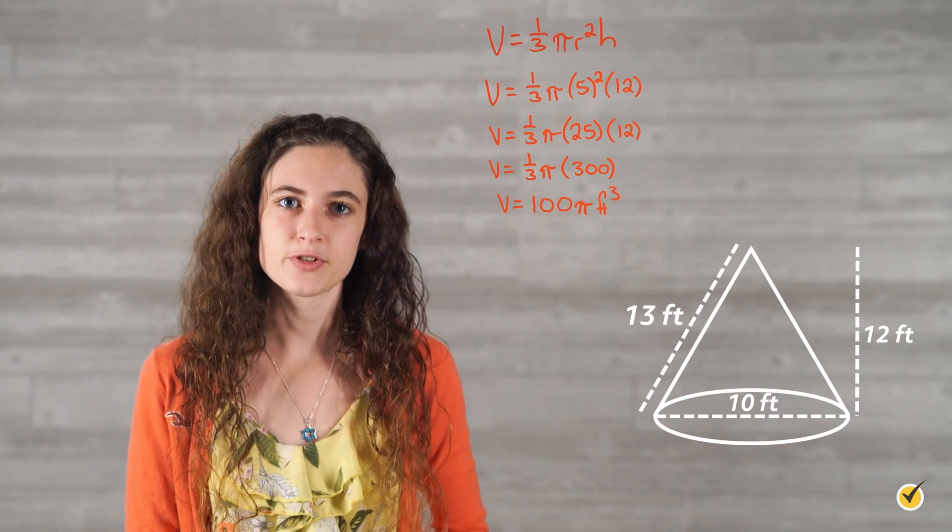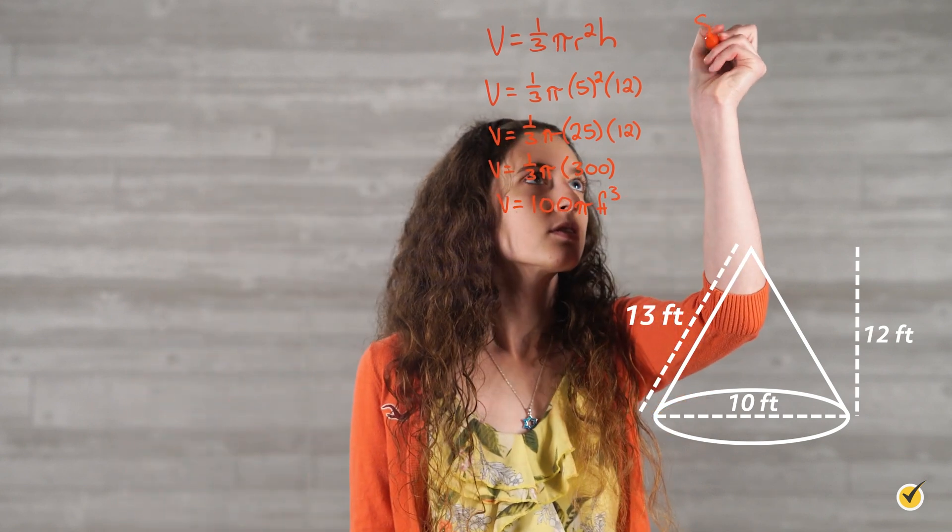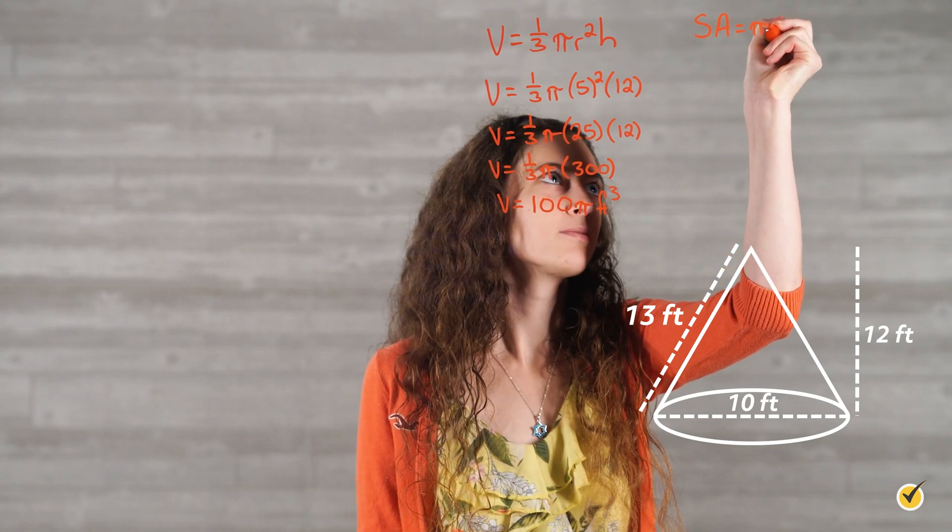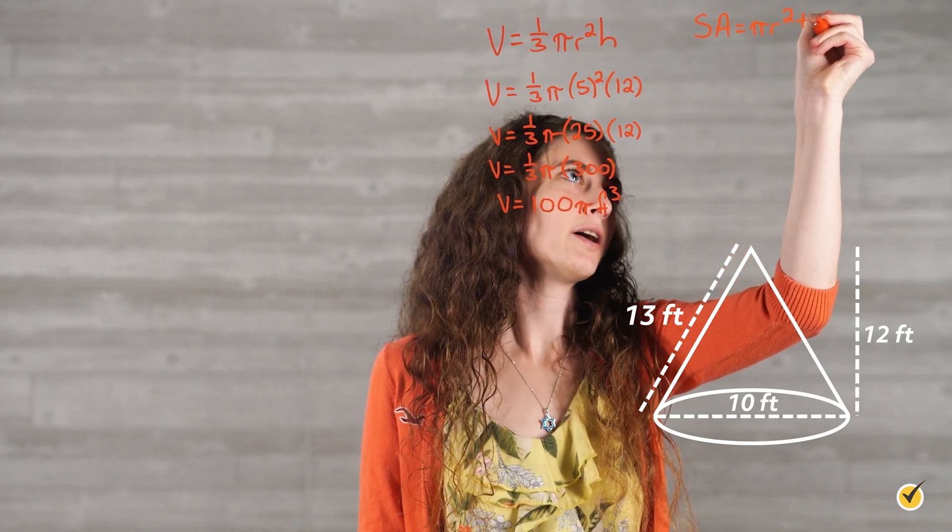Finally, let's find the surface area. Surface area is equal to pi r squared plus pi r l.